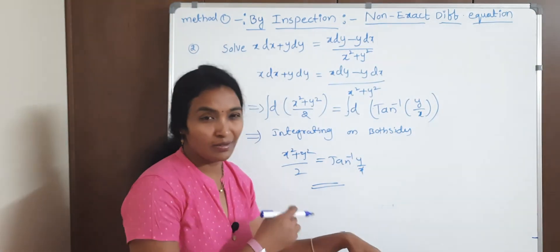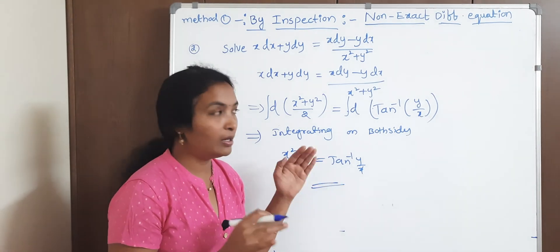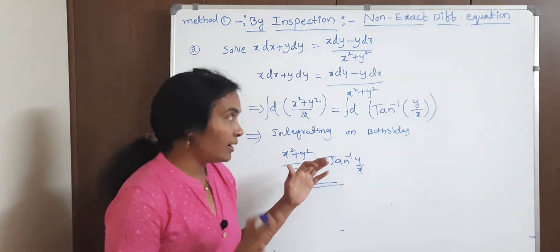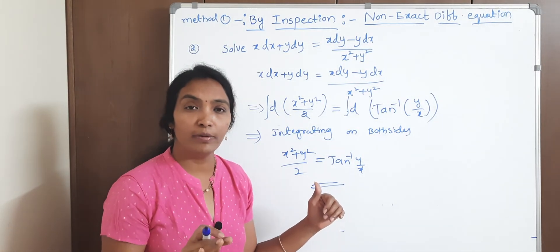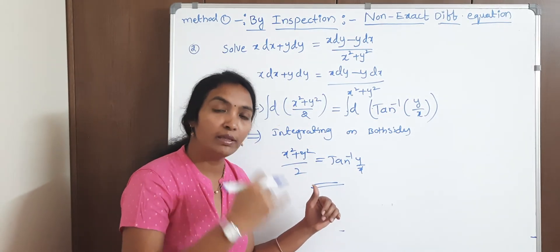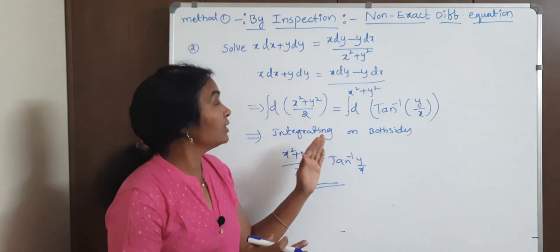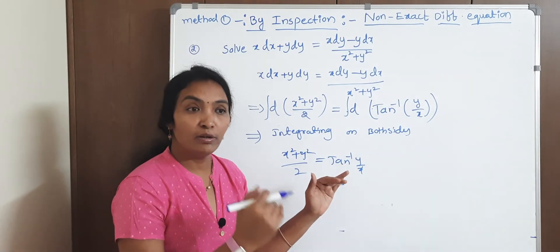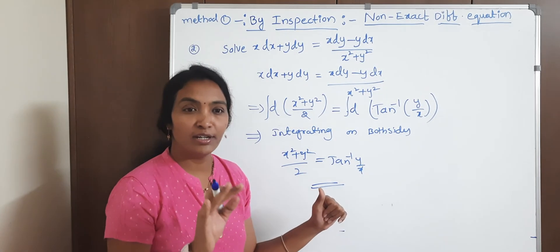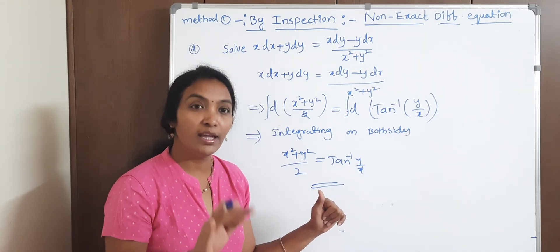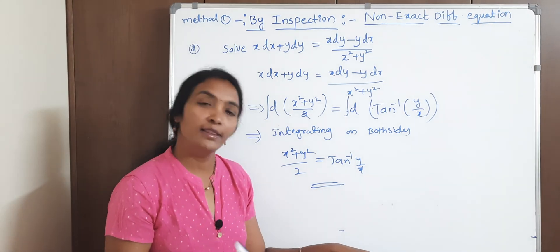This is a very simple method. Next class we'll continue. If you want more problems, comment in the comment box. For more on differential equations, let me know and I'll solve them. Next are four more important methods for non-exact equations — methods one, two, three, and four — applying integrating factors. We have five methods total; this was the first: the inspection method. Like, share, and subscribe, and press the bell icon. Thank you.